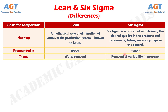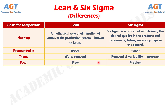Difference Number 3: The main concept of Lean Thinking is the removal of waste, while Six Sigma is centered towards the elimination of variation in the processes. Difference Number 4: Lean is flow focused, but Six Sigma is problem focused.